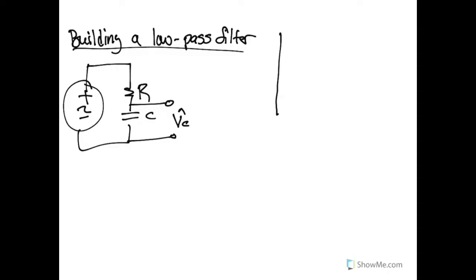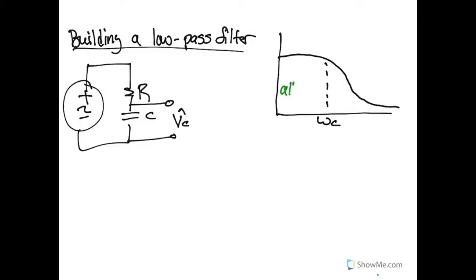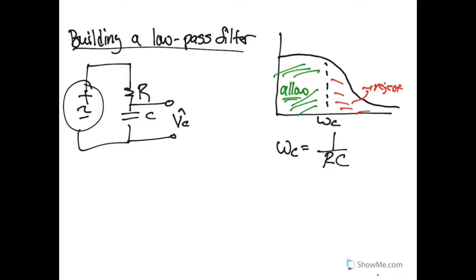For our low-pass filter, what that means is that for certain frequencies below the corner frequency, those frequencies are going to be allowed. So everything below this corner frequency we're going to let in, and everything above the corner frequency we're going to reject. For signals like this, the corner frequency is dictated by 1 over RC.